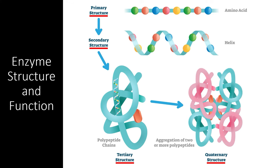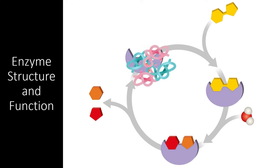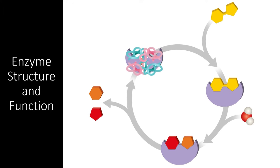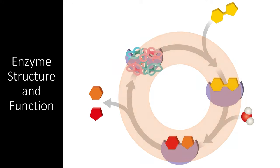When working properly, an enzyme is held together into a specific shape by many different bonds at every level of the protein structure. In this ideal shape, the enzyme's activity is perfectly suited to the substrate and the enzyme can easily catalyze the reaction it is supposed to. However, any disruptions to the protein structure can drastically alter this process.